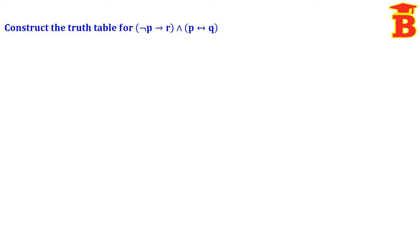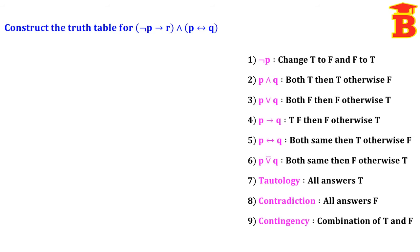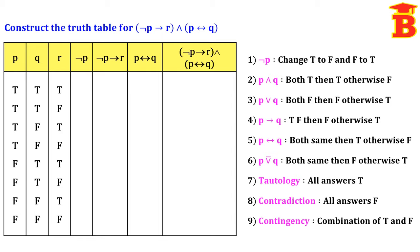Similarly, we can construct the truth table for three statements P, Q, R. If we have three statements then there are eight possibilities. To remember them easily: first column write four times T then four times F; second column write two times T, two times F, two times T, two times F; third column write single TF repeated four times. In this way we get all eight different possibilities.